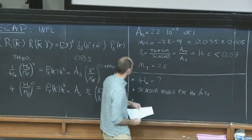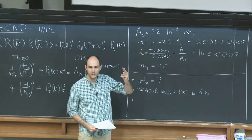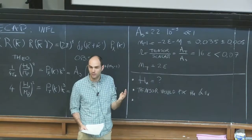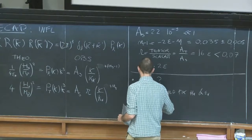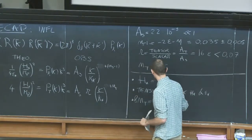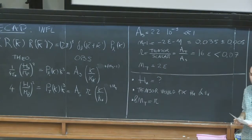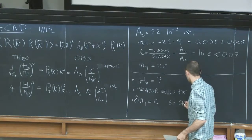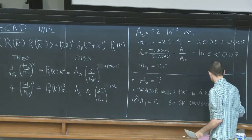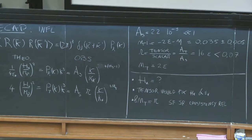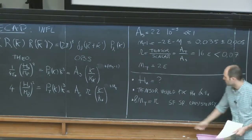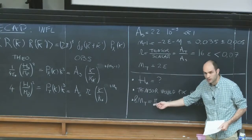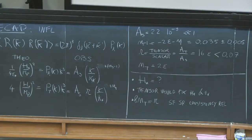Another interesting comment: if we measure four numbers — amplitude, tilt, tensor amplitude, and tensor tilt — but only have three unknowns (epsilon, eta, Hubble), there will be a relation among them. The simplest way to write it is n_T equals minus R/8, or equivalently 8 n_T equals R, since n_T is 2 epsilon and R is 16 epsilon. This is the single-field slow-roll consistency relation. If you break single-field or slow-roll, that relation breaks — a smoking gun. But measuring R is hard and measuring its tilt is even harder.